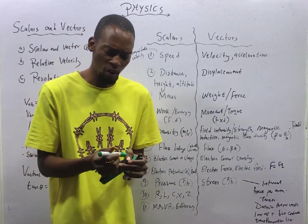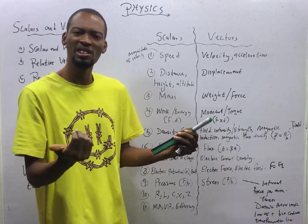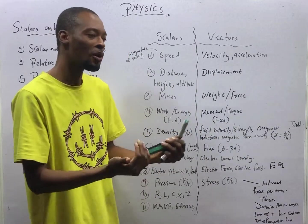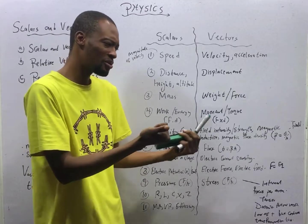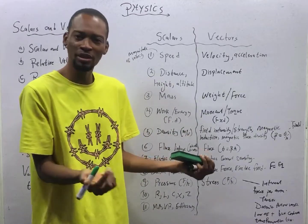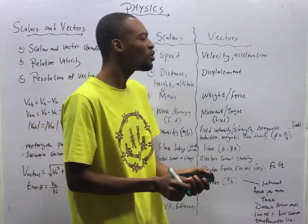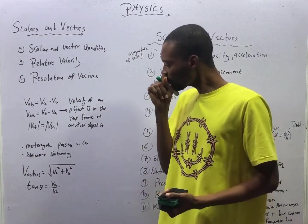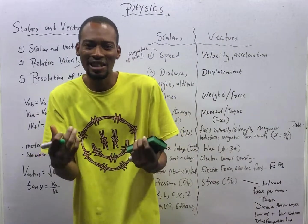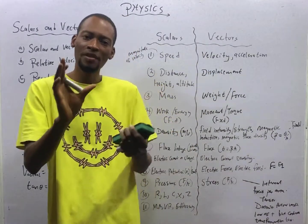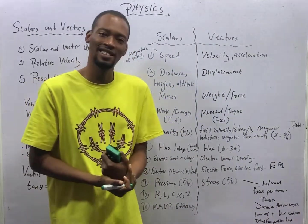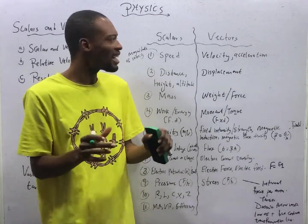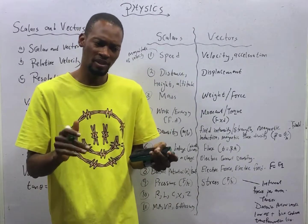Scalar quantities are quantities that have magnitude and no direction, or that have magnitude but no direction. Where vector quantities are quantities that have both magnitude and direction. If you understand it that way, it may be difficult for you to understand scalars and vectors. Don't take scalars as quantities that don't have direction. Take it this way.